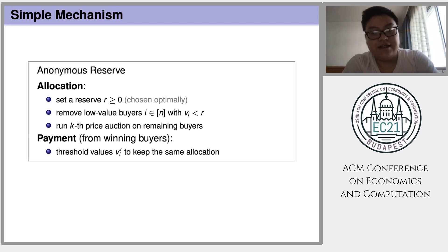This is the most popular auction used in eBay and other online shops. First, the seller sets a reserve price and removes those low value buyers whose values are below this reserve. For the remaining buyers, the seller will run a k-th price auction. Similar to before, the payments from the winning buyers are the threshold values for those winners to keep winning.